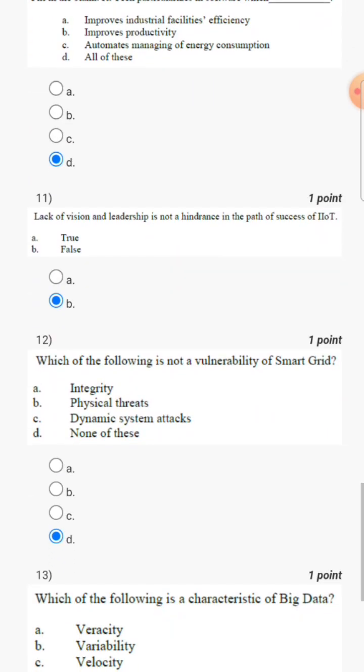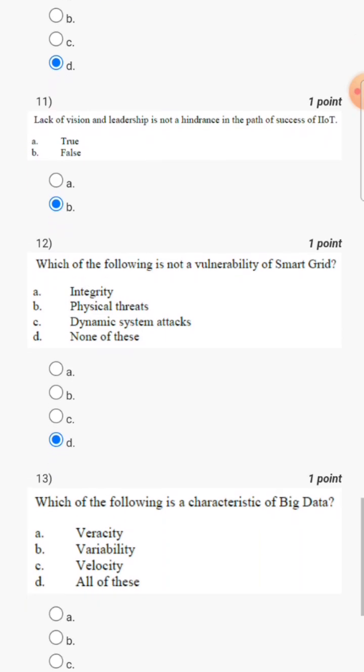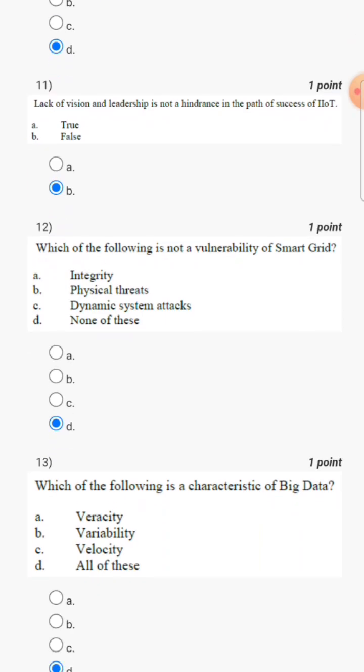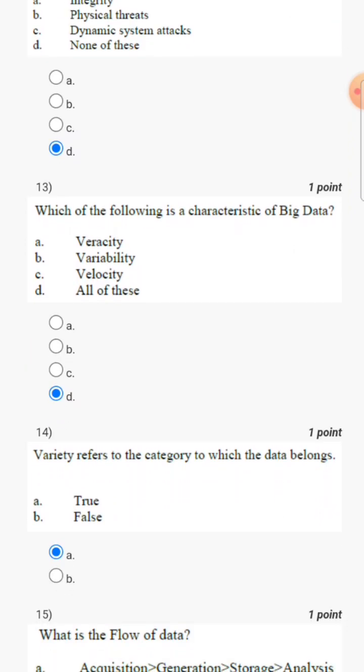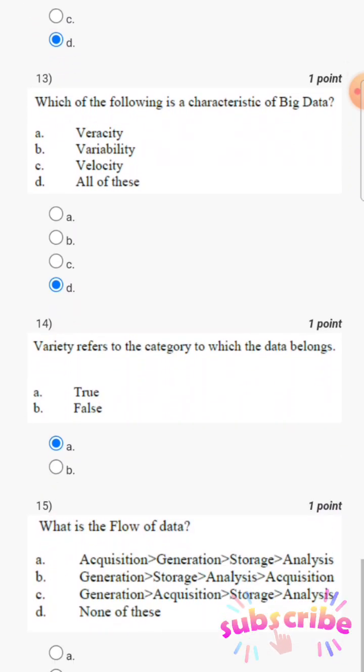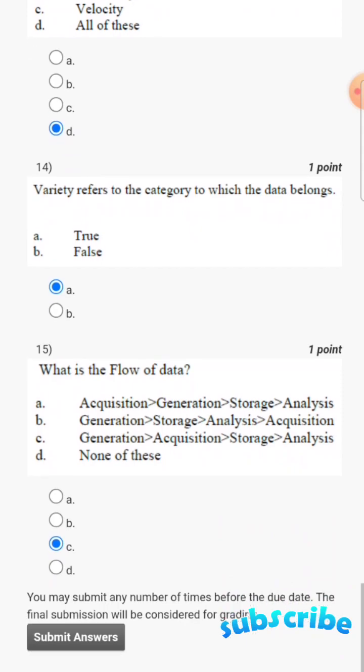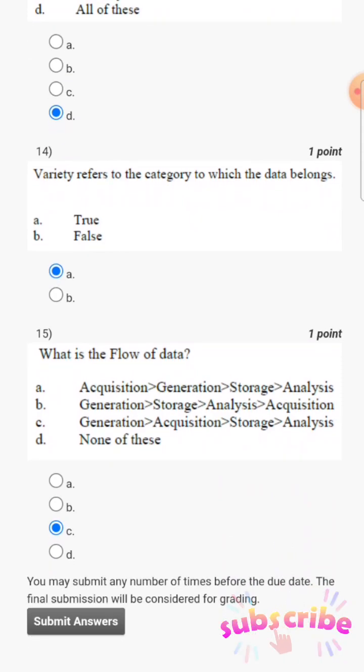Question 11, its answer is B, that is false. Question 12, its answer is D, none of these. Question 13, its answer is D, all of these. Question 14, its answer is A, that is true. Question 15, its answer is C. So we have completed the assignment 11. Thank you, see you in the next lecture.